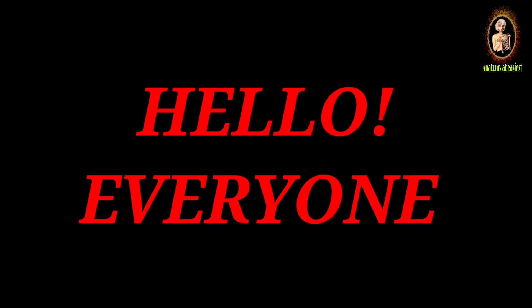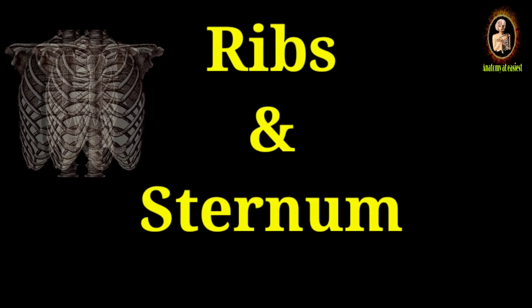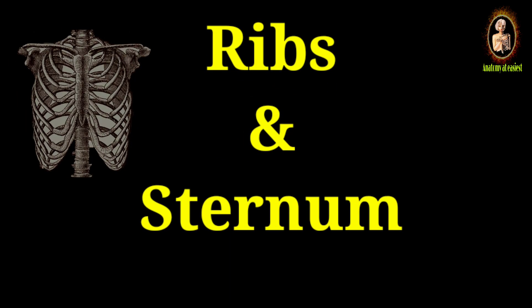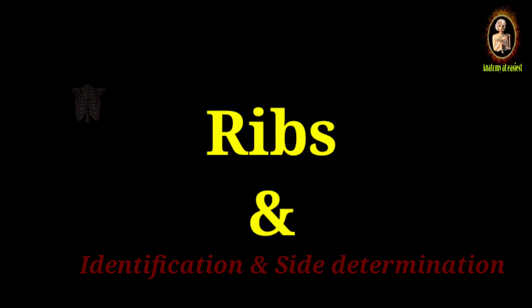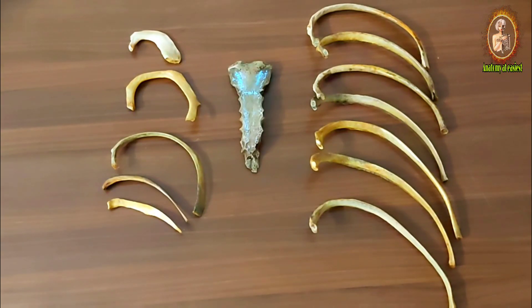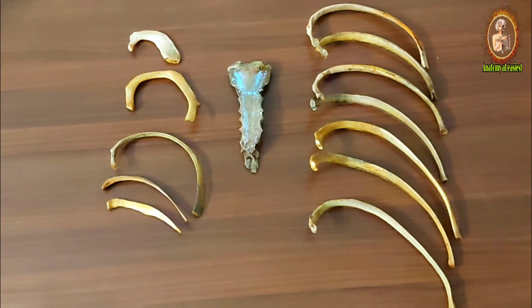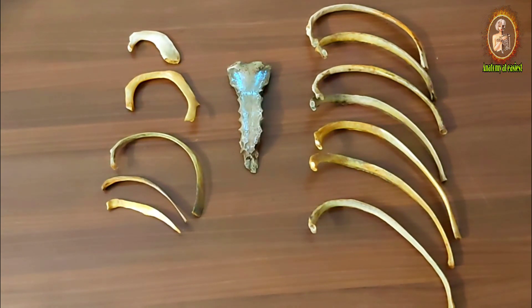Welcome back to Anatomy at Easiest. In today's video we will be studying ribs and sternum, basically the identification of ribs and their side determination. The ribs are paired bones — there are 12 pairs of ribs present in the human body with the sternum present in the midline of the chest. The sternum is also called as the chest bone, present in the midline of the thoracic cage.